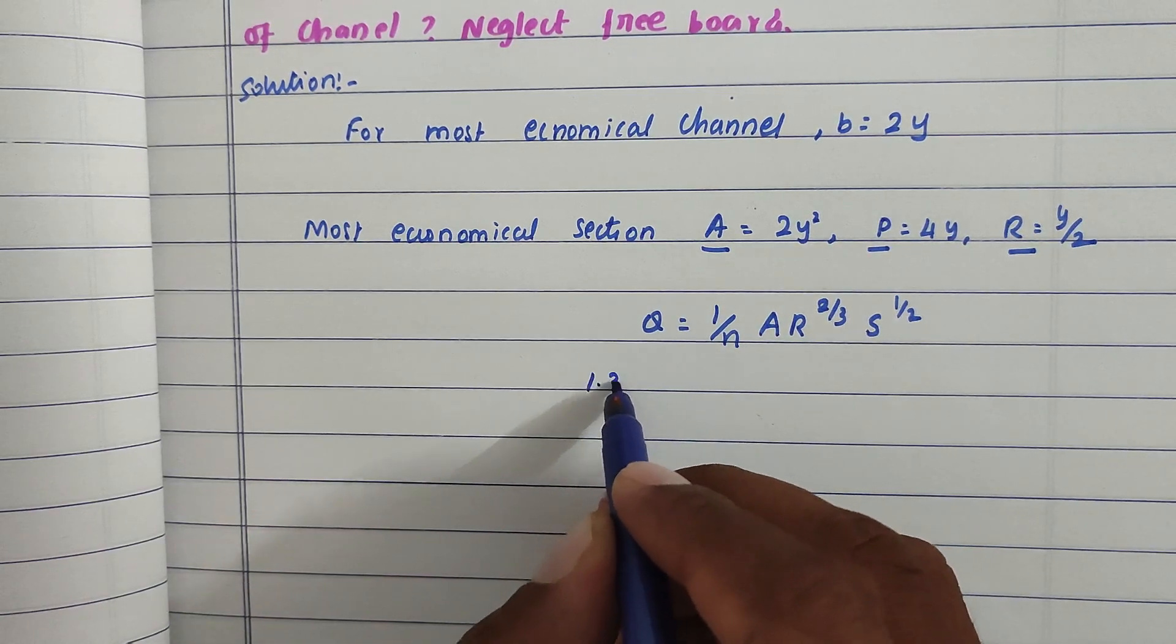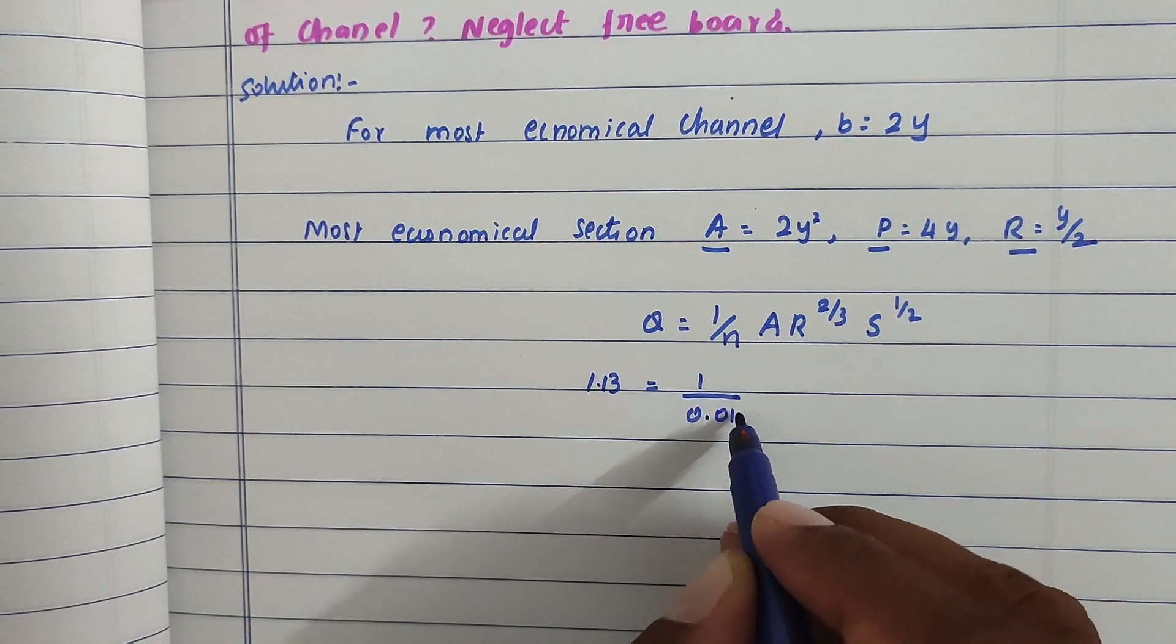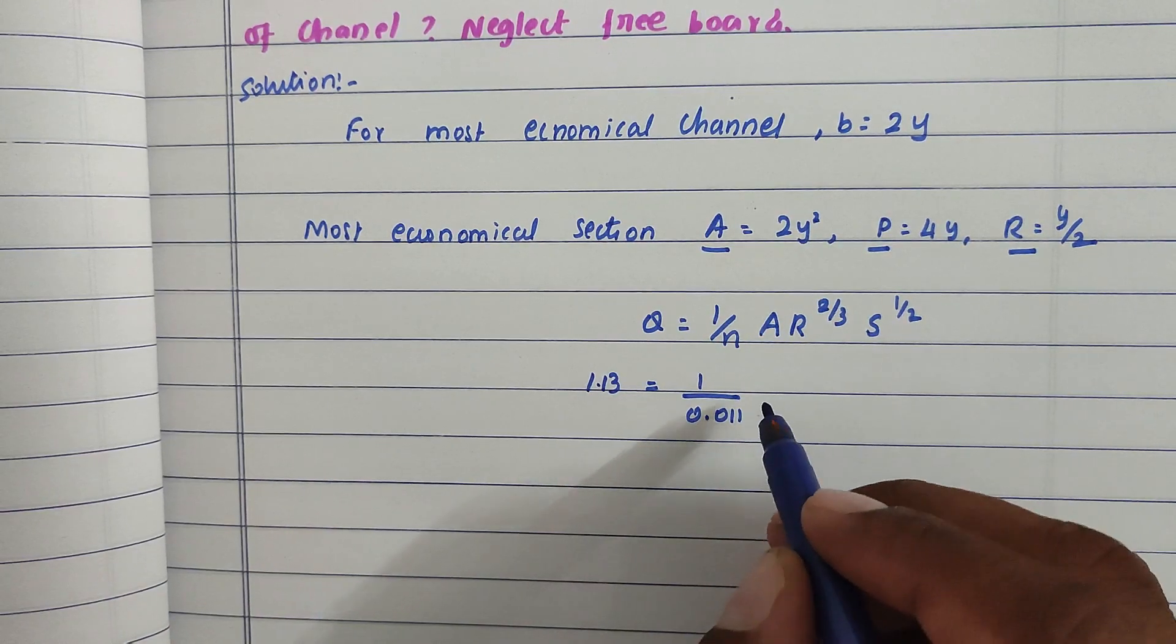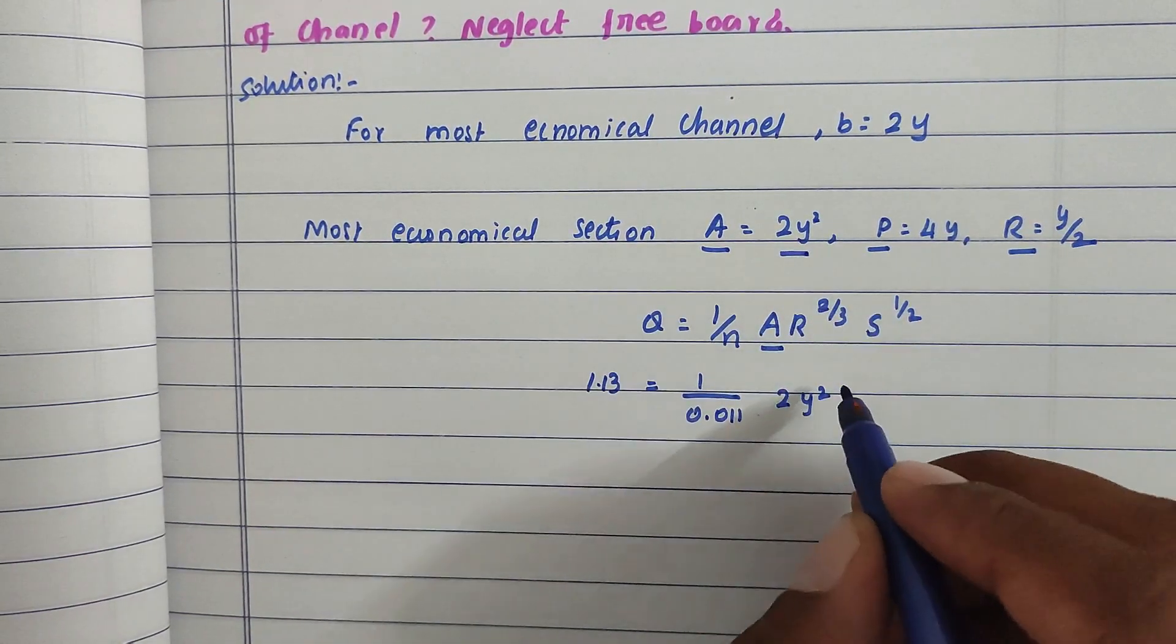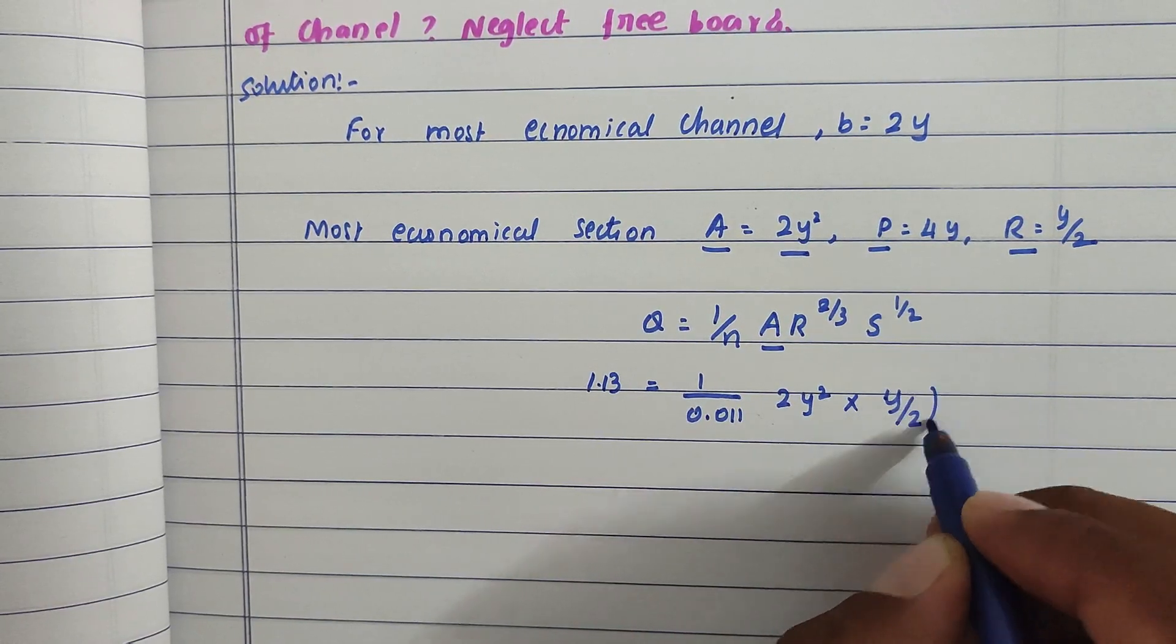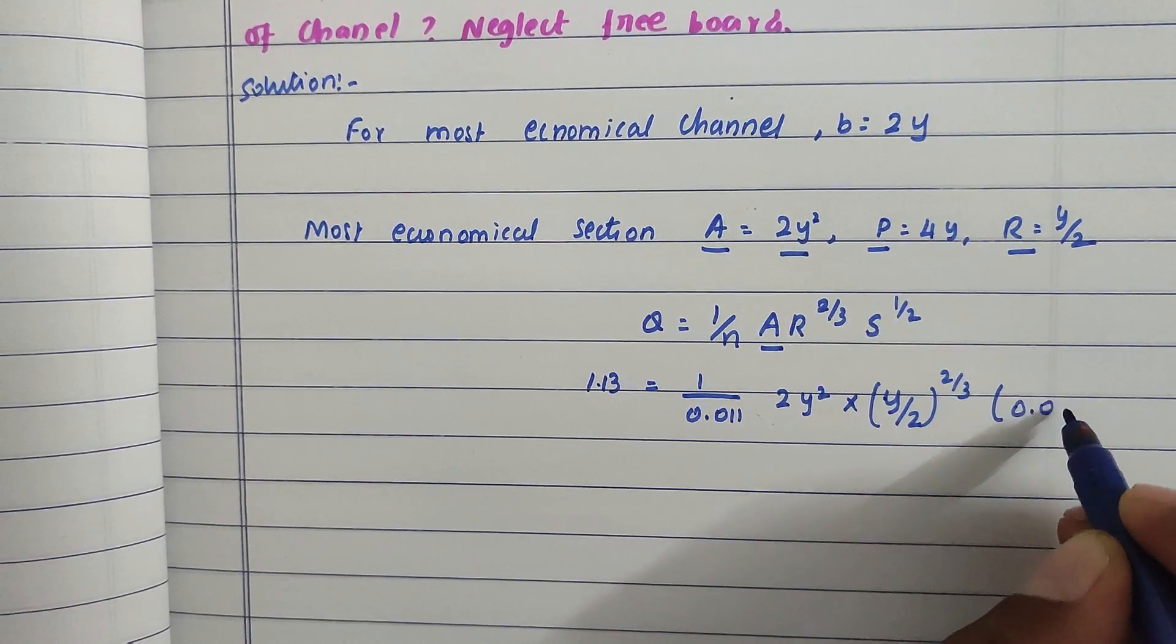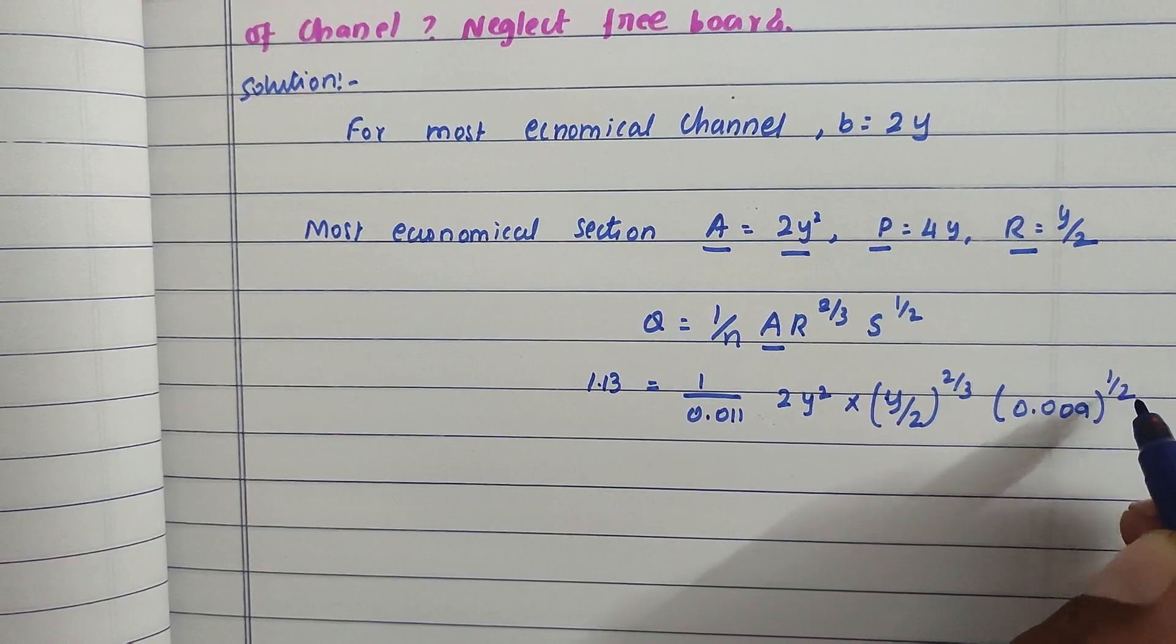Substituting all values: Q equals 1.13, that is given. Then 1 divided by n value which is 0.011. Next is 2y squared, that is area equals 2y squared, into R to the power 2 by 3. R is y by 2, the whole power 2 by 3. And S, the slope is given as 0.009, so 0.009 whole power 1 by 2.